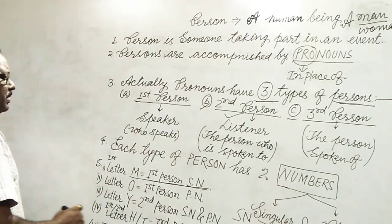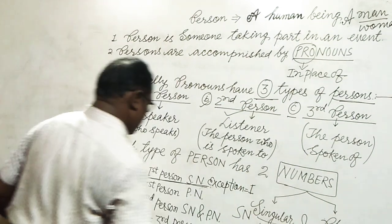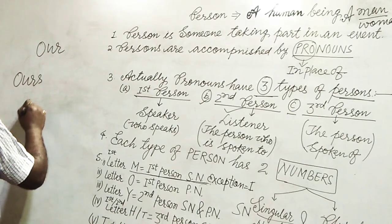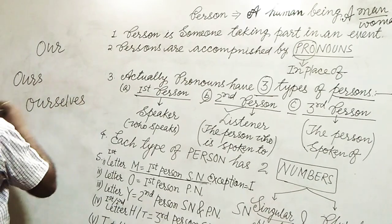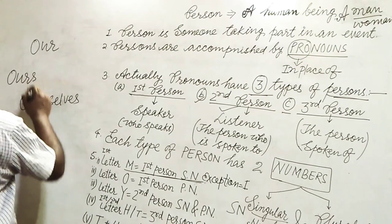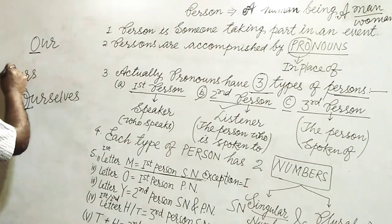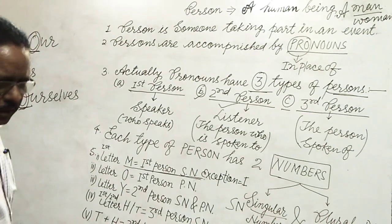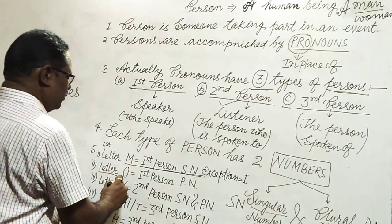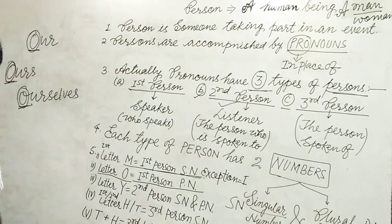I am writing: our, ours, ourselves. These are pronouns. When O letter comes first in a pronoun, it denotes first person plural number. O denotes first person plural number.